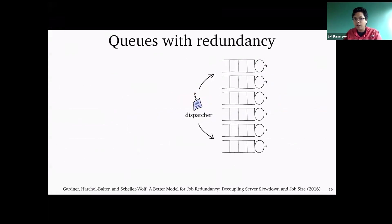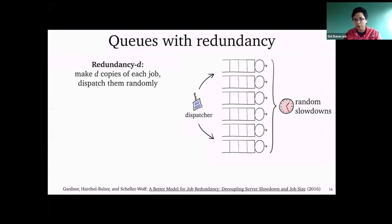Back to the queueing setting. Here's another example from Gardner, Harchol-Balter, and Scheller-Wolf about what's called a queue with redundancy. One way of thinking about it: it's like a supermarket checkout where you have a bunch of cashiers serving customers. You can create multiple copies of yourself in different lines — you and your friend stand in two checkout lines. This kind of model is called a queue with redundancy, where you take the same job and create multiple copies at different servers.